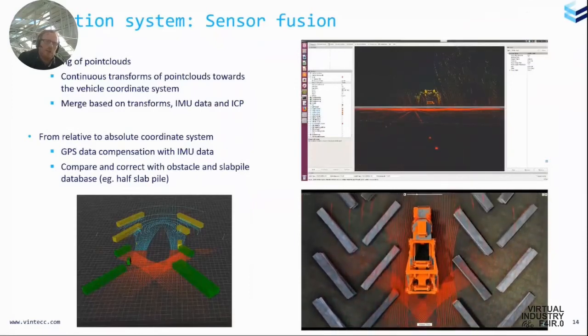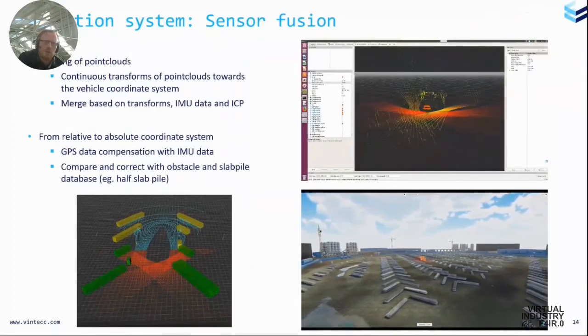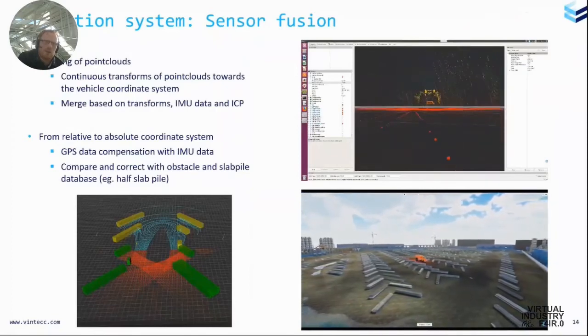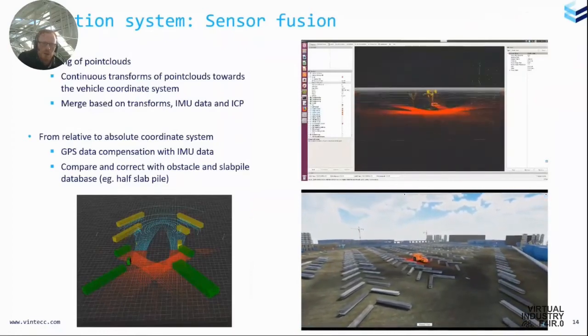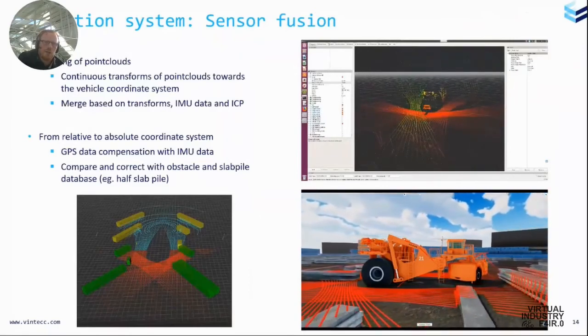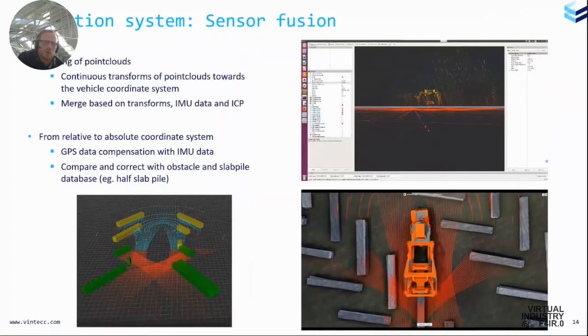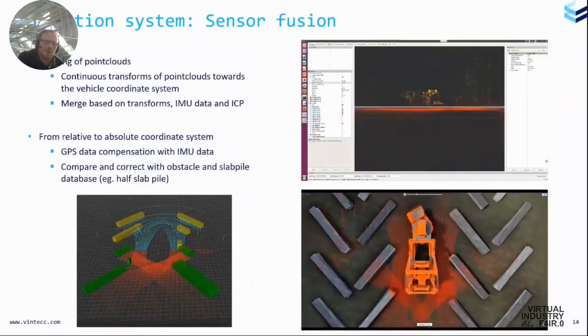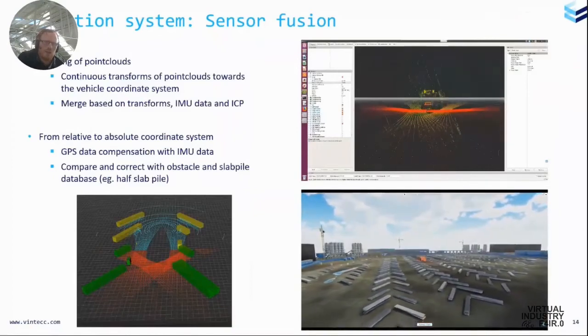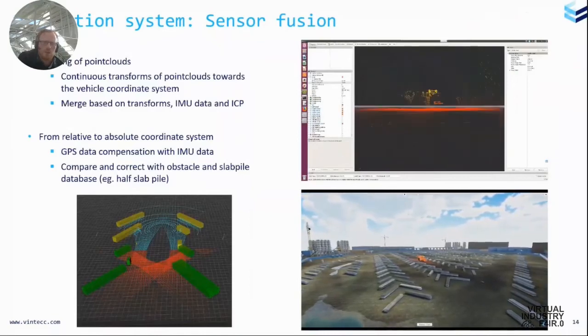But now we have all this data. We also need to do something with it because this is a very big stream of data and the most interesting one here for the perception is the LiDAR. Of course, the LiDAR data, we have five LiDARs on this machine. We need to stitch those images together and you see it there in the upper movie. We have made an algorithm that here automatically stitches these LiDARs together. So we are searching for the same parts in the images. We of course have an initial setup that we are trying, but then we search for small deviations.